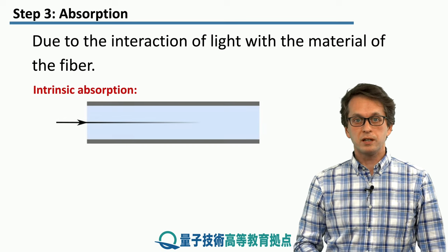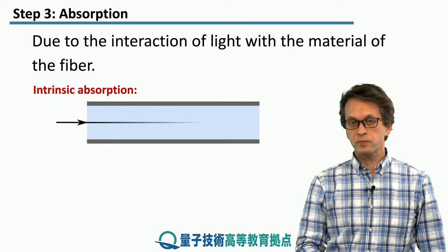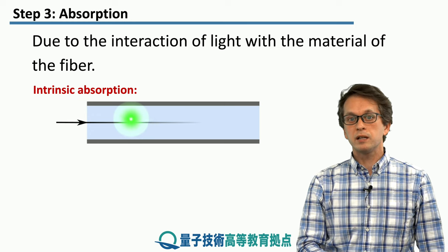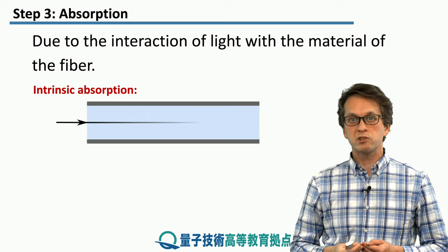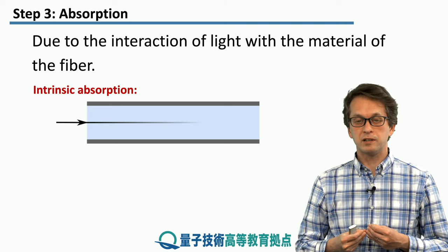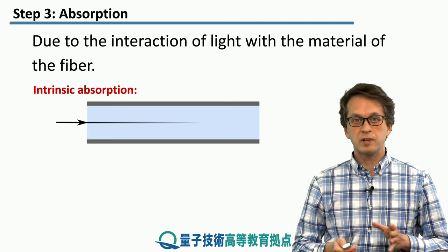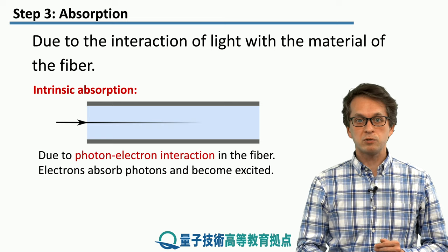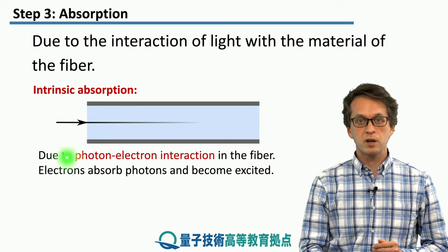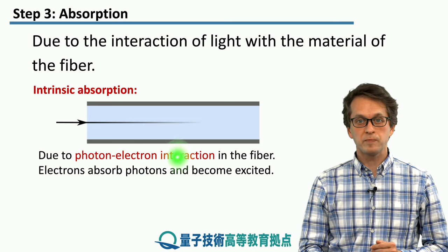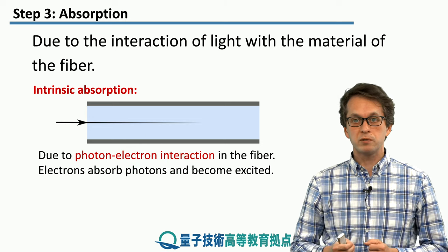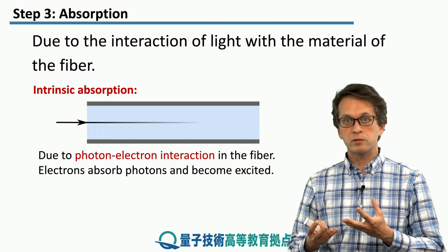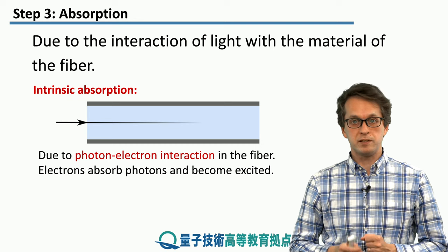There are two types of absorption. There is intrinsic absorption, where even if we have a perfect fiber, the intrinsic absorption is responsible for attenuating the signal. This is something that we cannot get rid of — it's just present in there, and it's due to the interaction between the photons of the signal and the electrons in the material. The electrons absorb the photons from the signal and they become excited. Therefore, the overall power of the signal decreases.